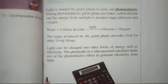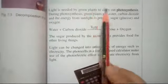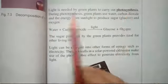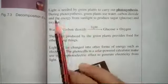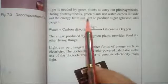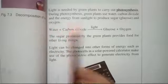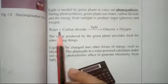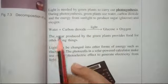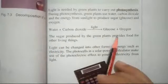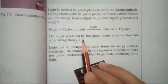On page number 79: light is needed by green plants to carry out photosynthesis. During photosynthesis, green plants use water, carbon dioxide, and the energy from sunlight to produce sugar (glucose) and oxygen. The chemical equation is: water plus carbon dioxide gives glucose and oxygen in the presence of light. The sugar produced by the green plants provides food for other living things. This ends extensive question number 3.